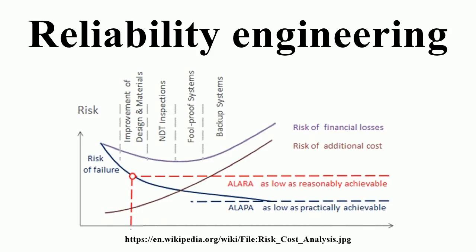Although stochastic parameters define and affect reliability, according to some expert authors on reliability engineering, reliability is not achieved by mathematics and statistics alone. You cannot really find a root cause by only looking at statistics. Nearly all teaching and literature on the subject emphasize these aspects and ignore the reality that the ranges of uncertainty involved largely invalidate quantitative methods for prediction and measurement.